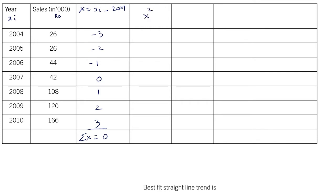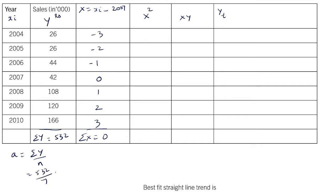Then we have to find x squared, xy, and then find the trend values after finding constants a and b. A is calculated as summation y upon n. When we add all y values, summation y equals 532, and n is the number of observations or years, which is 7. So a equals 532 by 7 which is 76. x squared: (−3)²=9, (−2)²=4, (−1)²=1, 0, 1²=1, 2²=4, 3²=9. Summation x squared equals 28.